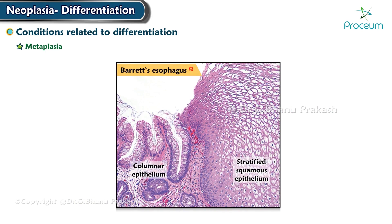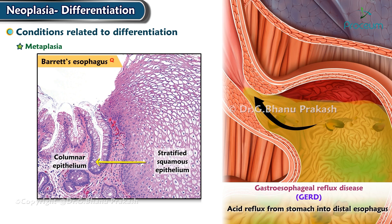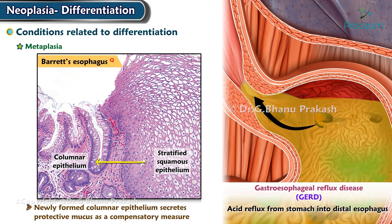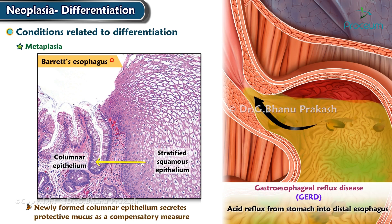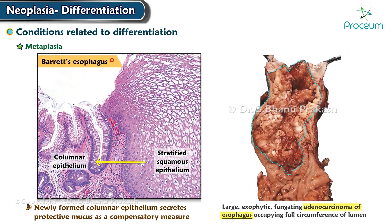In Barrett's esophagus, the stratified squamous epithelium of the lower end of the esophagus is replaced by columnar epithelium in response to chronic exposure to gastric acid due to gastric reflux seen in GERD. The newly formed columnar epithelium secretes protective mucus as a compensatory measure.